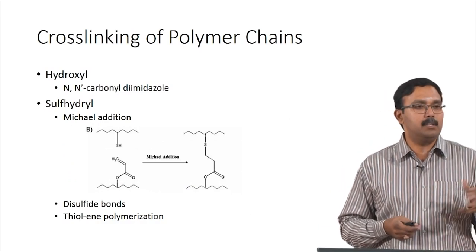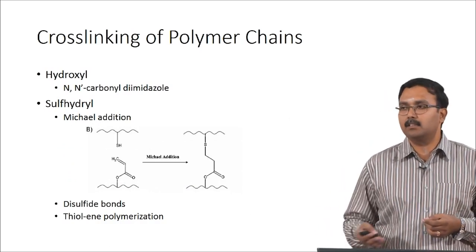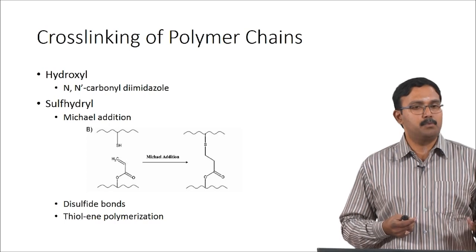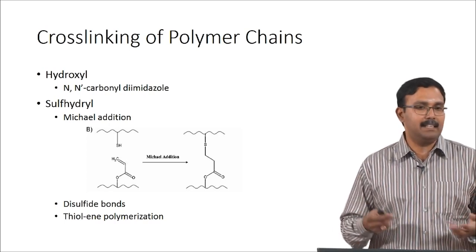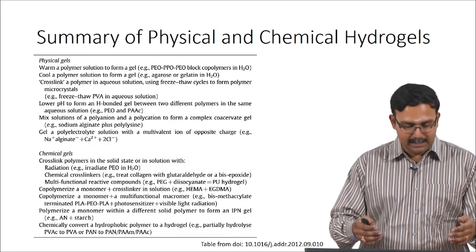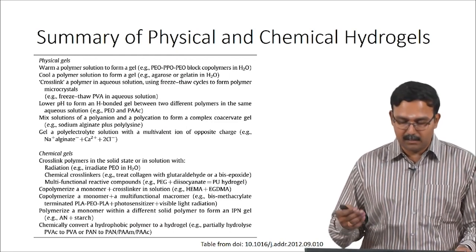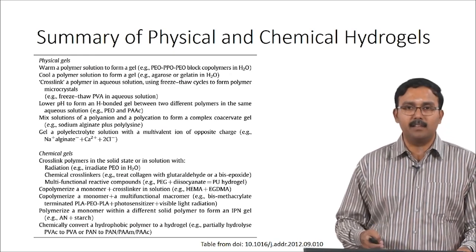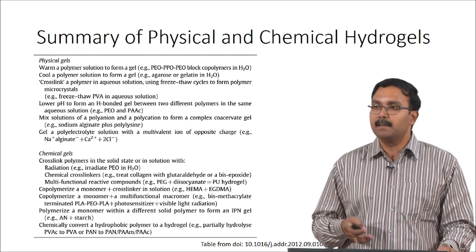Hydroxyl groups can also be used — if you have hydroxyl groups, you can activate them and create crosslinks using carbonyl diimidazole. Sulfhydryl groups can be used for chemical crosslinking via Michael addition or disulfide bond formation. This summarizes all the physical and chemical hydrogel crosslinking techniques. With that we come to the end of this lecture — we will talk about stimuli-responsive hydrogels in the next class.